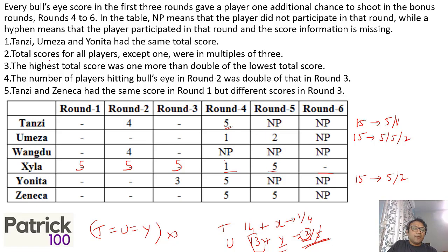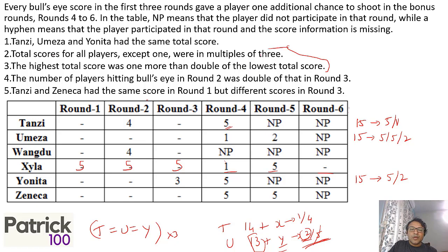The highest total score was 1 more than double the lowest total score. If the lowest is a multiple of 3, then the highest will not be a multiple of 3, because highest equals double plus 1. And if the highest is a multiple of 3, then the lowest will not be. So one of the two — lowest or highest — will not be a multiple of 3.